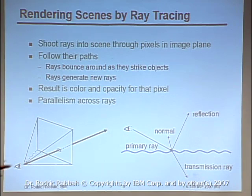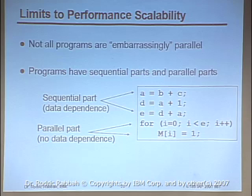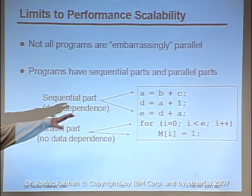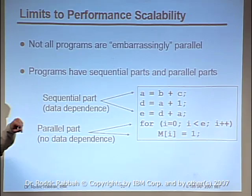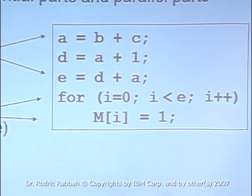Not all programs have a lot of parallelism or are embarrassingly parallel. You saw basic code sequences in earlier lectures with a sequential part where there are data flow dependencies between computations — you calculate A but need the result of A to do the next instruction. But a loop that just initializes a big array can be done in parallel. So programs have sequential parts and parallel parts.